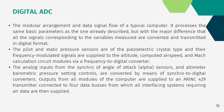The digital ADC processes the same basic parameters as the analog type but with the major difference that all signals corresponding to the variables measured are converted and transmitted in digital format. The pitot and static pressure sensors are of the piezoelectric crystal type and their frequency modulated signals are supplied to the altitude computer, airspeed, and Mach calculation circuit modules via a frequency-to-digital converter. Analog inputs from synchros of angle of attack alpha sensors and the altimeter barometric pressure setting controls are converted by synchro-to-digital converters. Outputs from all modules are supplied to an ARINC 429 transmitter connected to four data buses, from which all interfacing systems requiring air data are supplied.